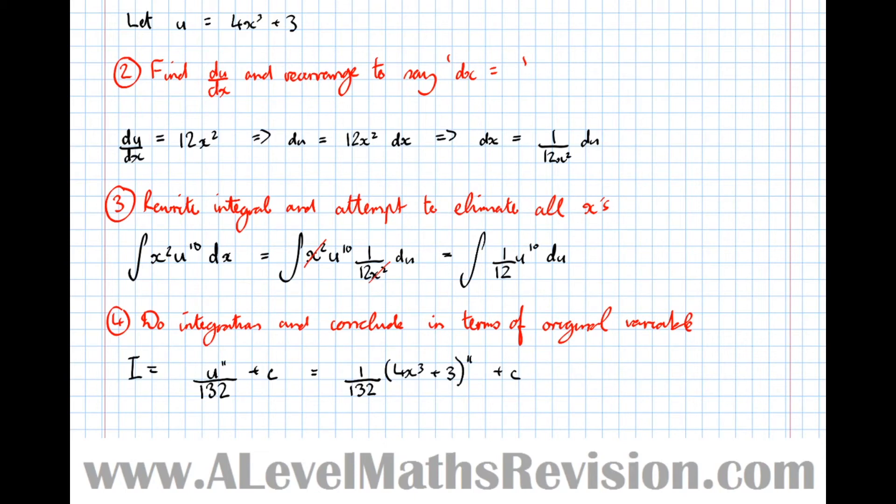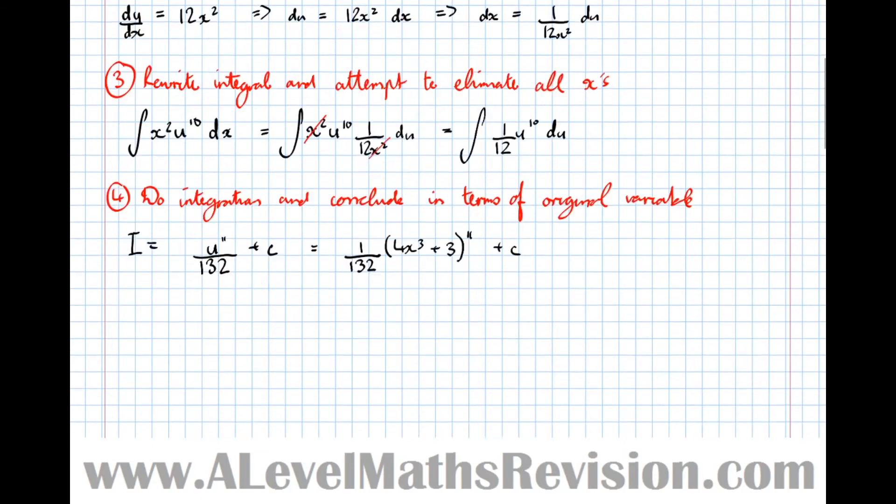So that's an example, and I'm going to call that a nice example, because these x's cancel. So this is the ideal scenario in an integration by substitution. Let's have a look now at an example where that might not be the case. So let's go for the integral of x times the square root of 4x minus 3 dx. Now, this one's equally doable using a method called integration by parts, but we'll leave that aside, for now we'll do this by substitution. So remember before, the rule was let u equal the innermost bit.